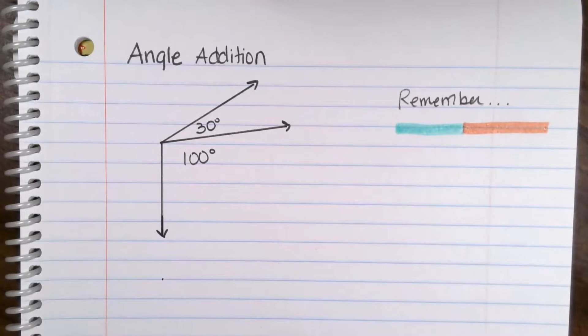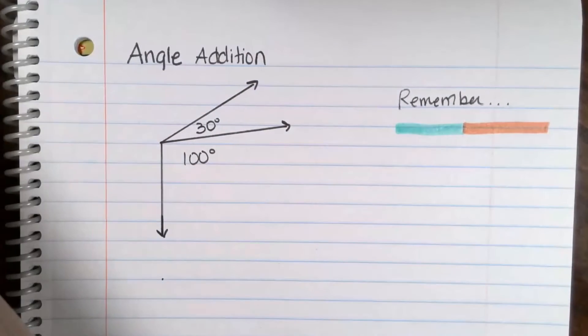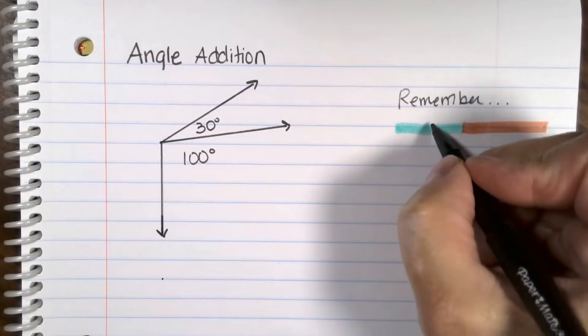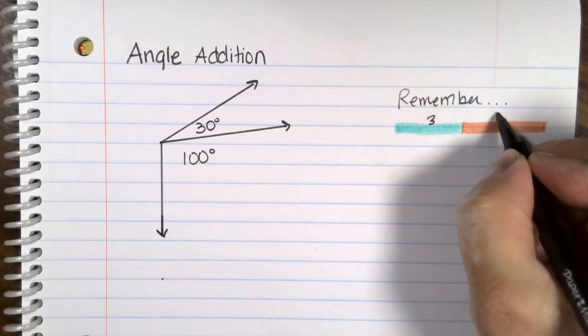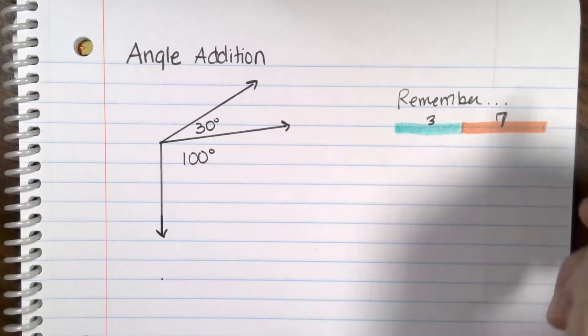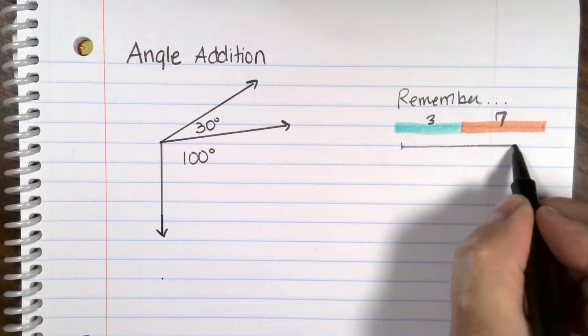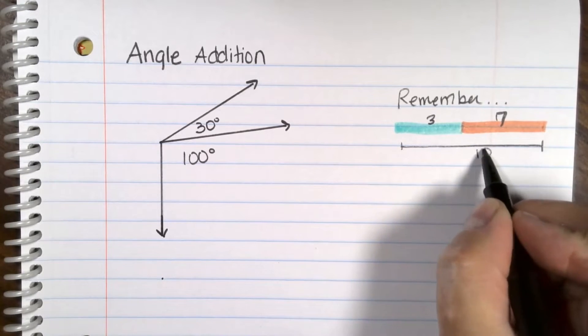And the question was, how long were these going to be? Like if I tell you this one is three and then this one is seven, then the length of the entire thing would be ten. You would just add those together.